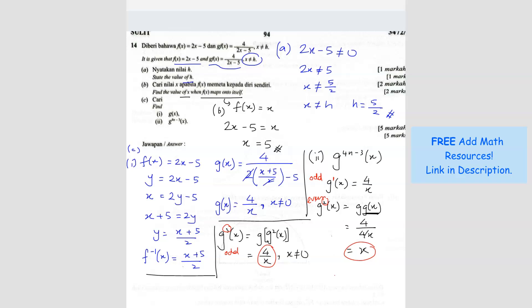We are looking for g power 4n minus 3. So if I just do g power 4n first, g power 4n is even or odd? Because you're going to multiply by 4, right? So it's a multiple of 4. So multiple of 4 will always be even number. Okay, this one will always be even. So if it's even number, it will be x.